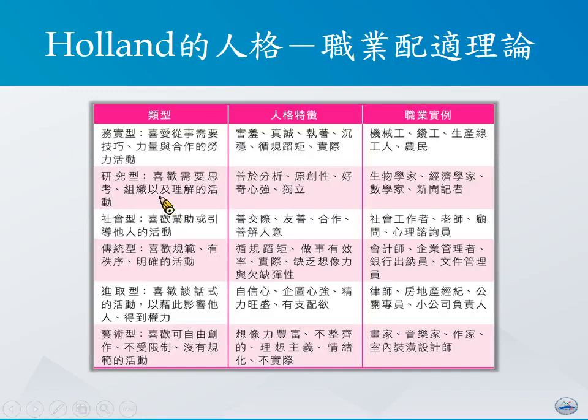第二种类型叫做研究型，泛指一个人比较喜欢需要思考、组织以及理解的活动。这些人通常具备善于分析、重视原创性、具备强烈好奇心，以及喜欢独立作业等特征。常见的职业例子包括生物学家、经济学家、数学家，或者新闻记者等等。第三种类型叫做社会型，指的是这些比较喜欢透过帮助或引导他人的活动进而感到满足的人。